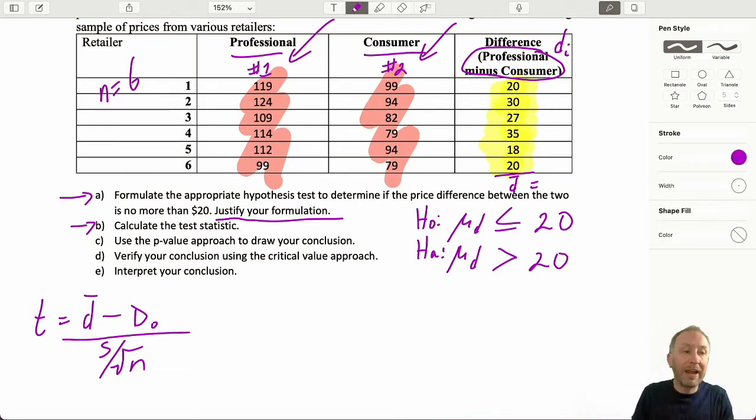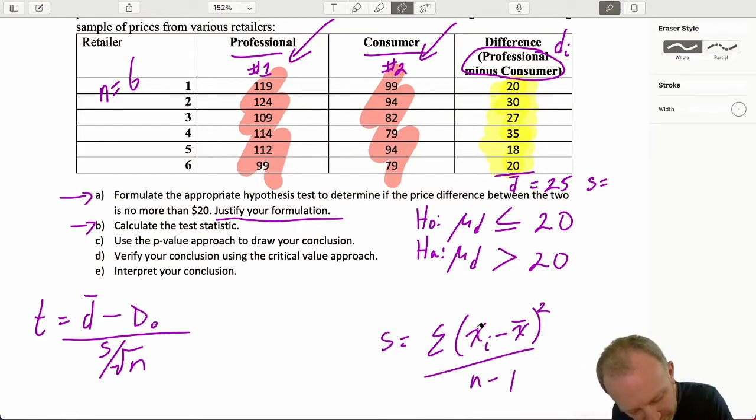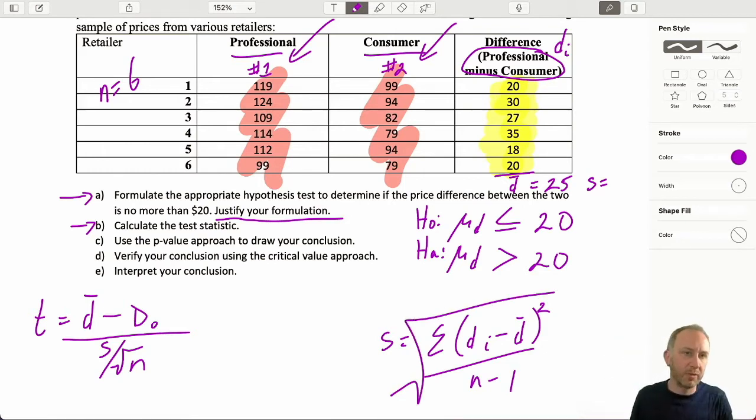When I calculate my average difference, again, I'm only taking the average of those yellow differences. Then I also need my standard deviation. And again, that standard deviation, we've gone through these types of calculations before, divided by n minus one, although I should use the right notation here, because now we're looking at difference values and the average difference, and we're taking the square root of that. I'm not going to take up time going through these calculations, but that's going to be 6.75.